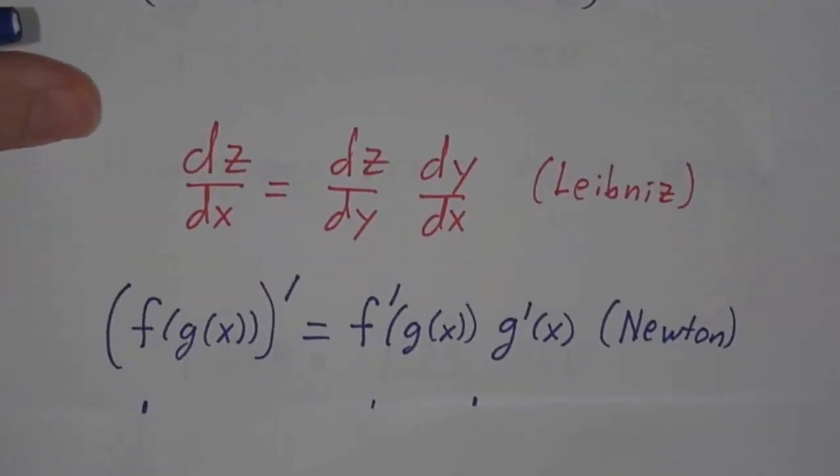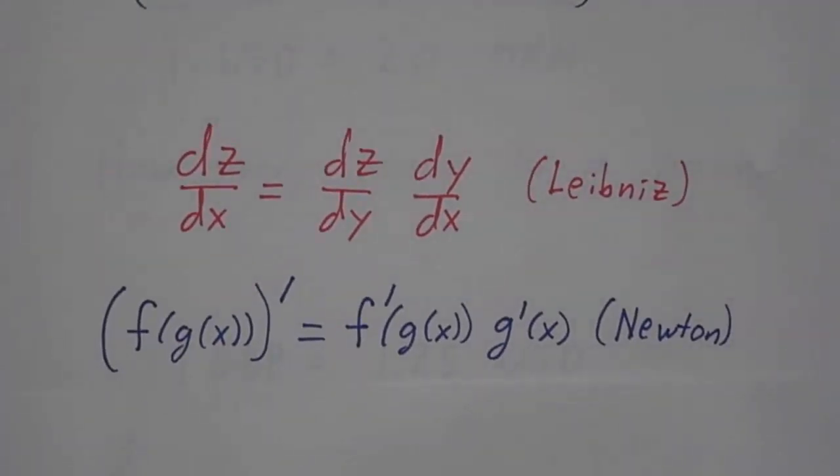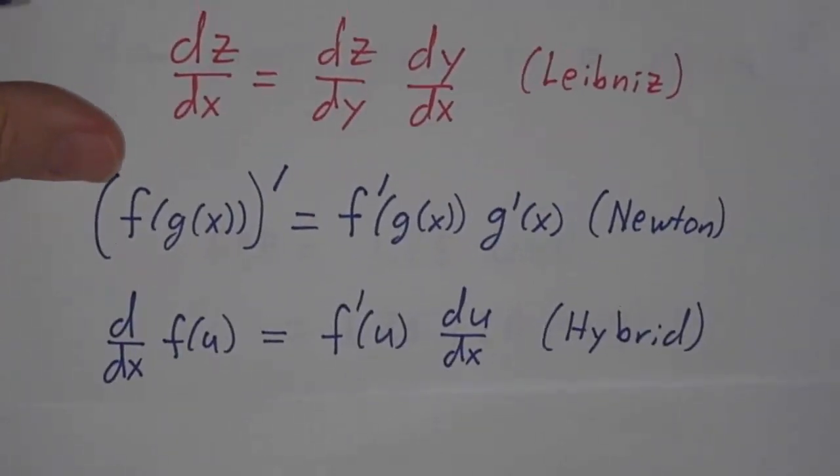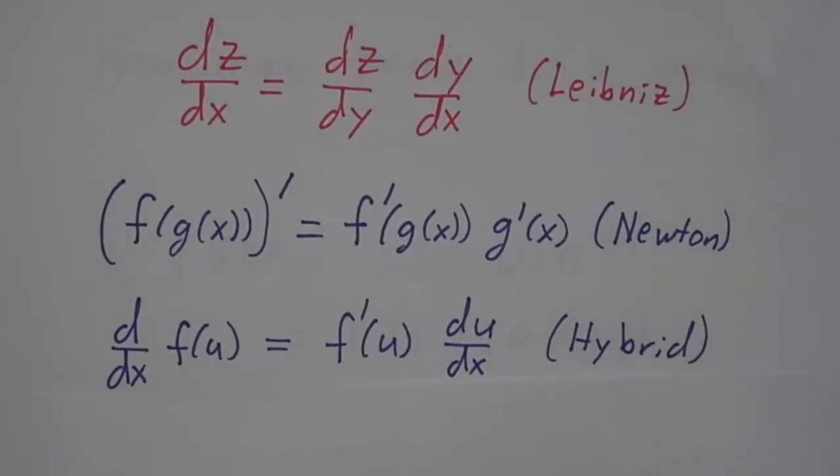The second version looks very different, and that one's due to Newton. And then there's a third hybrid version. So in this video, we're going to talk about the Leibniz version. In the next video, we're going to talk about Newton and the hybrid.